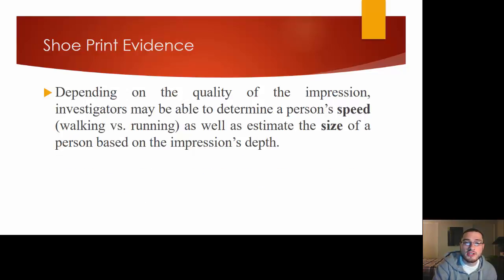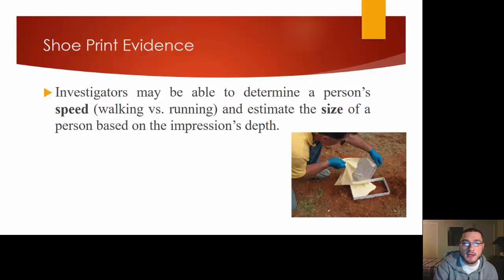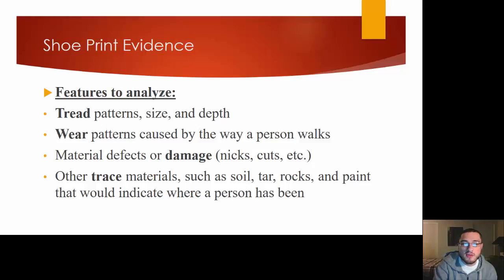Depending on the quality of the impression, investigators may be able to determine the person's speed — were they walking or running? — as well as estimate the size of a person based on the depth of the impression. Were they very heavy or very skinny? You want to determine if they were walking or running, and the size of a person based on the depth of their impression. Tread pattern size, depth, and wear pattern — all contribute to the analysis.